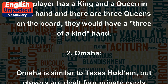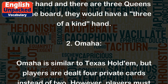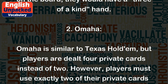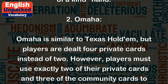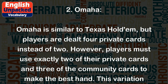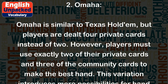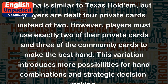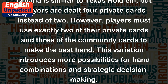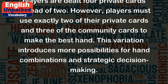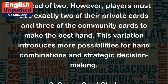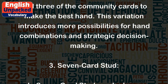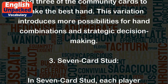2. Omaha. Omaha is similar to Texas Hold'em, but players are dealt four private cards instead of two. However, players must use exactly two of their private cards and three of the community cards to make the best hand. This variation introduces more possibilities for hand combinations and strategic decision making.